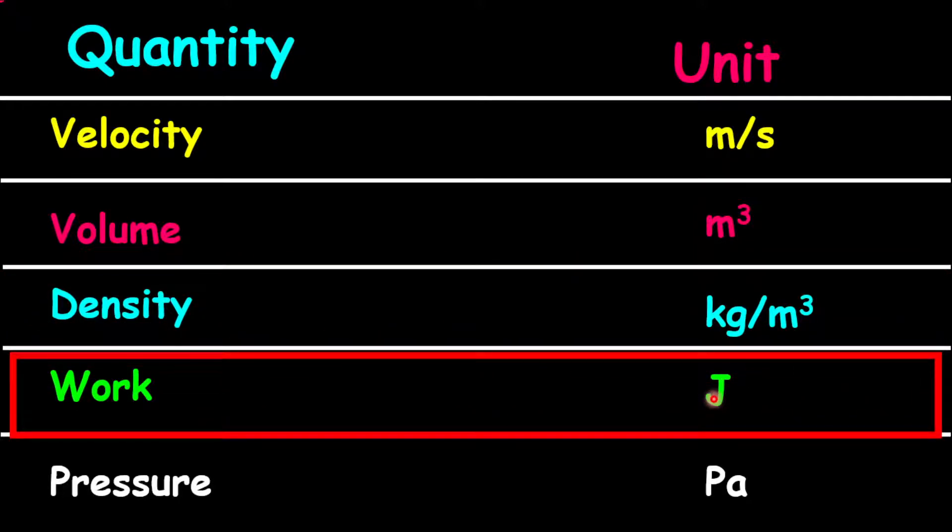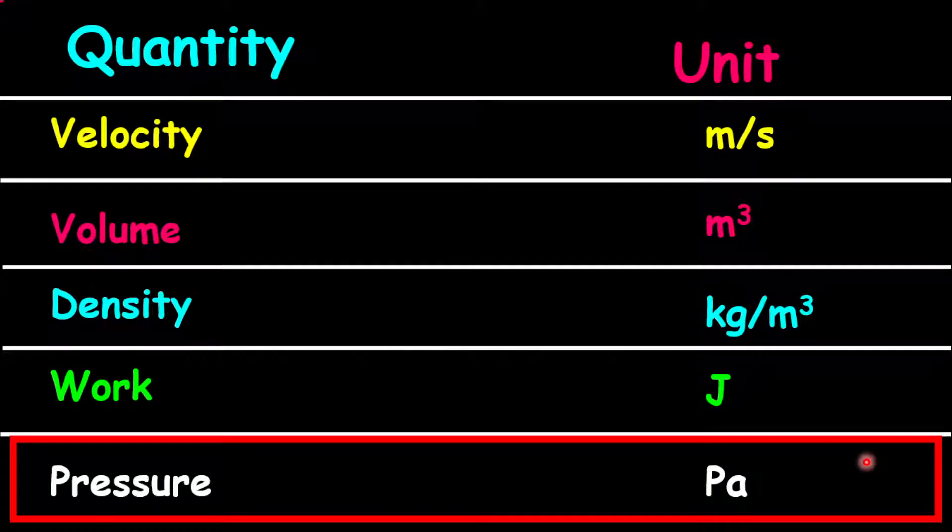Now look at work, it is represented by joules. This unit cannot be used to tell the exact base unit combination. This is because the joule is also a special unit given based on the name of a scientist. Pressure is measured in Pascal; it is another example with a special unit that cannot be used to indicate the base unit combination. Please note that these quantities do have other or alternate units that give details about the base unit combinations.